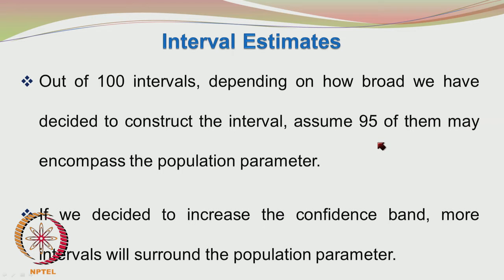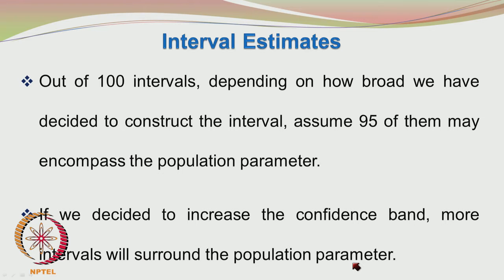95 is the usual confidence level we use. We will be doing the discussion with the assumption that the population variance sigma-squared is known — this is an assumption. Sigma-squared is also a population parameter and just as mu, we usually do not know sigma-squared. But for the purpose of discussion, let us take that sigma-squared is somehow known. Later on we will see how to handle situations when sigma-squared is also not known.